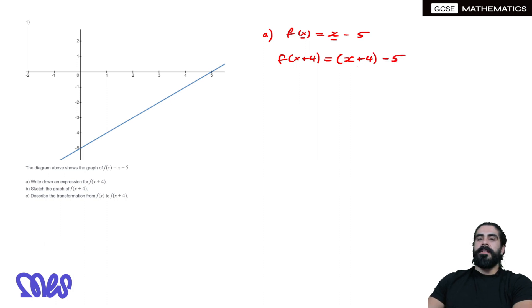In this case, the bracket is not really necessary. It's just x + 4 - 5. 4 - 5 is -1, so we have x - 1.